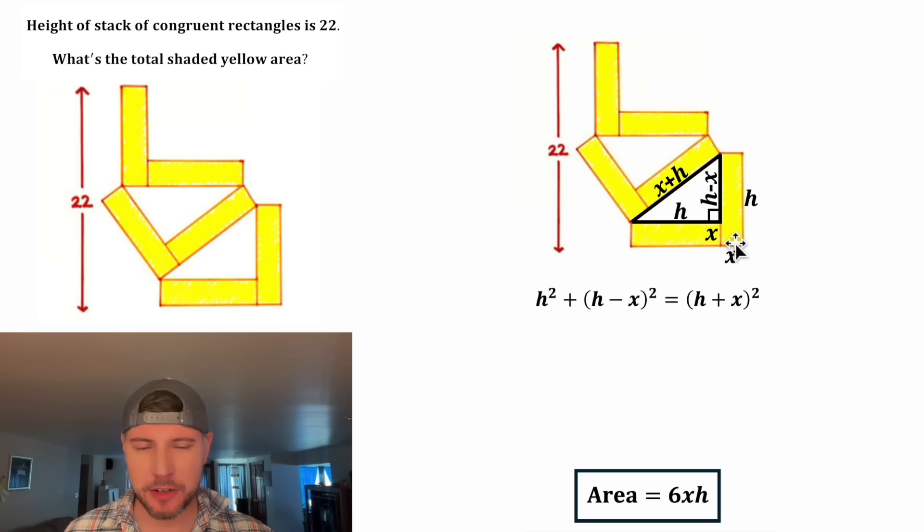It'll be H squared plus the quantity H minus X squared equals the quantity H plus X squared. From here, we can copy down the H squared. The H minus X squared means the same thing as H minus X times H minus X, which ends up multiplying to this. And that's going to be equal to the quantity H plus X squared, which is the same thing as H plus X times H plus X, which multiplies to this.